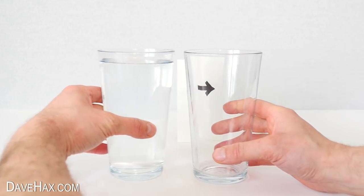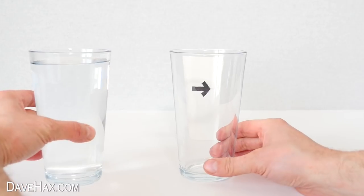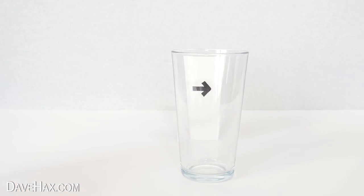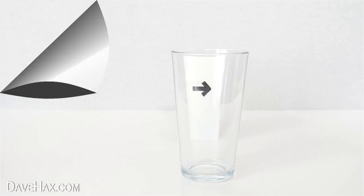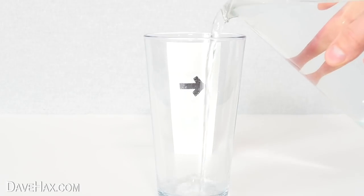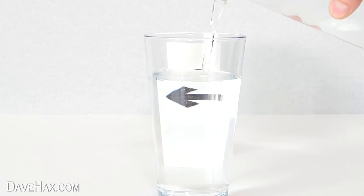Then swap the full glass for an empty one. Next ask your child to stand in front of the glass, close one eye and look straight at the arrow, and watch what happens when you fill up the glass with water.